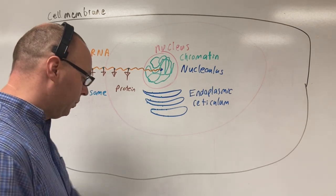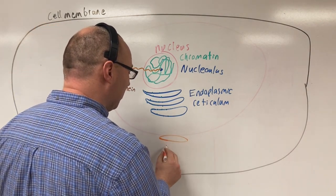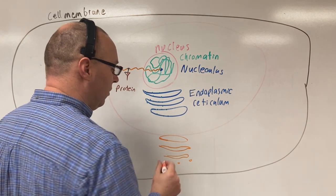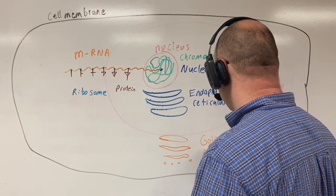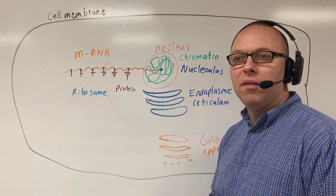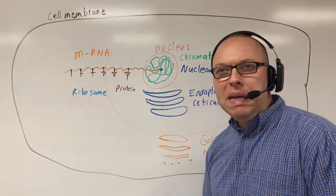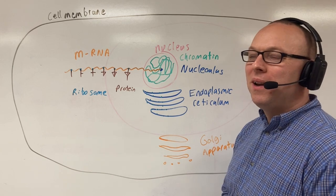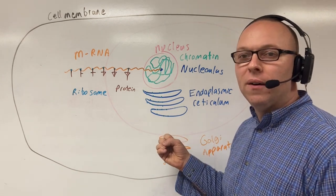The next structure is the Golgi apparatus. I like to compare it to Amazon. Amazon really doesn't make anything — but why does everybody shop at Amazon? Because Amazon does a wonderful job of shipping and receiving. That's exactly what the Golgi apparatus does: it gets things out of the cell and into the cell.